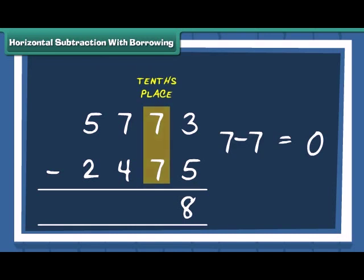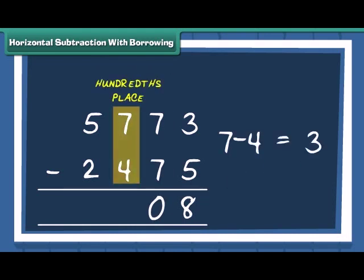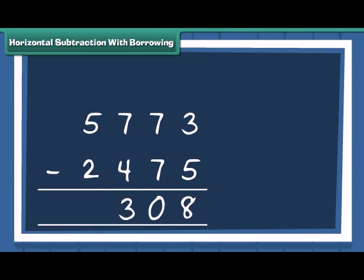Subtract the ten's to get 0. At hundred's place, 7 minus 4 is 3. Finally, subtract the thousand's to get 3. Was it not easy?